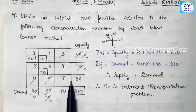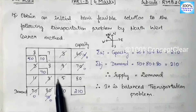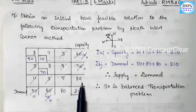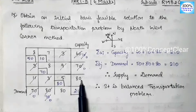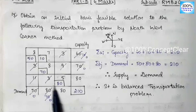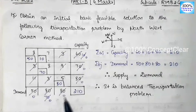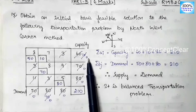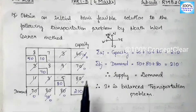For the fourth allocation, we allocate to the same remaining cell directly. Supply is 80 and demand is 80, so we allocate 80. Supply and demand both become 0, and all allocations are complete.